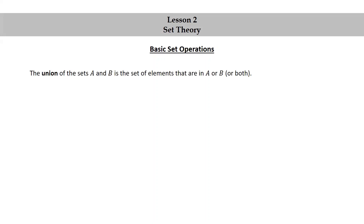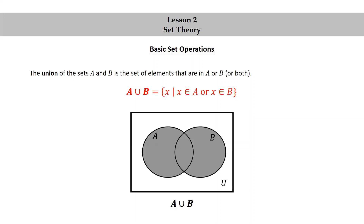Basic set operations. The union of the sets A and B is the set of elements that are in A or B or both. We use a U-shaped symbol for union, and we have A union B is equal to the set of X such that X is in A or X is in B. Here's a Venn diagram that allows us to visualize the union of sets A and B. Notice how everything is shaded in both the sets A and B in this Venn diagram.